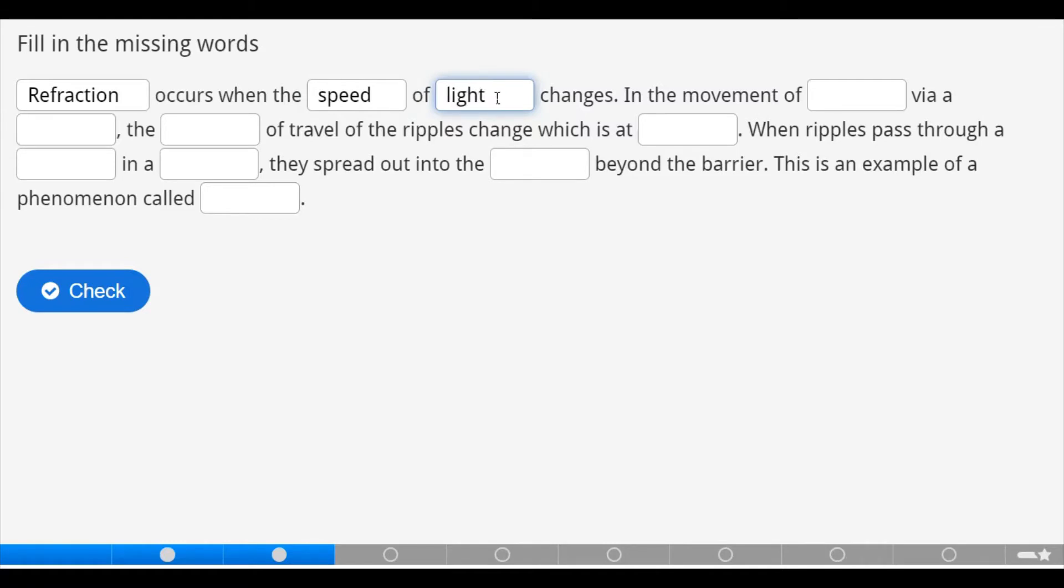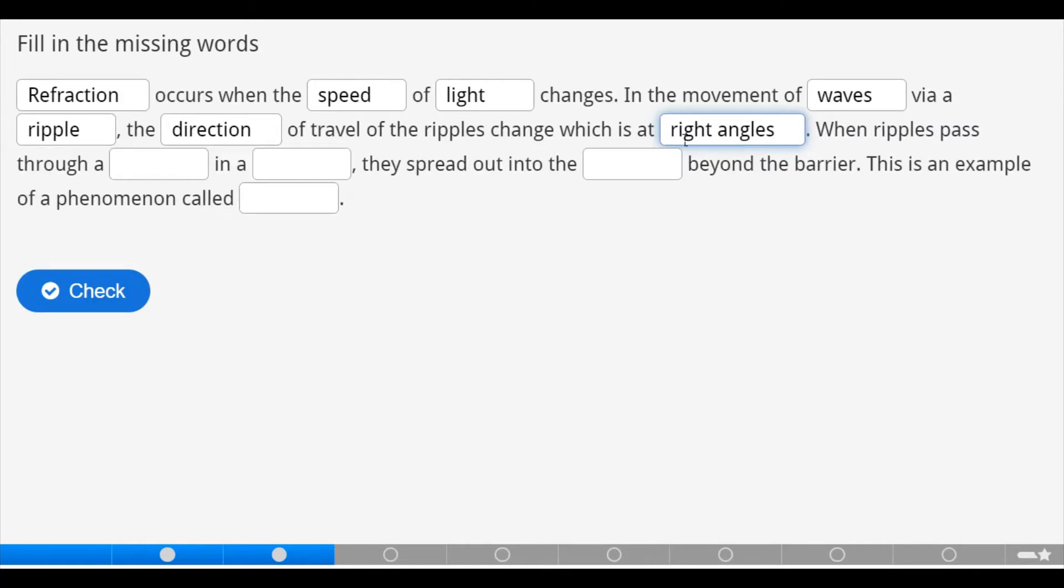In the movement of waves via a ripple, the direction of travel of the ripple is changed, which is at right angles. When ripples pass through a gap in a barrier, they spread out into the space beyond the barrier. This is an example of a phenomenon called diffraction.